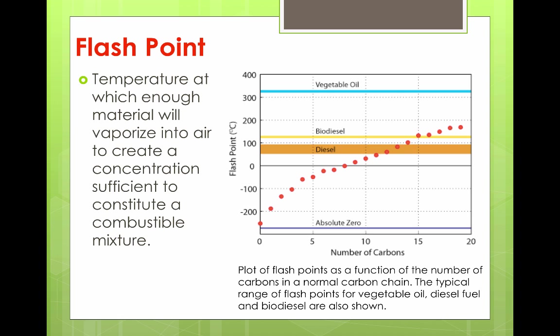Highlighted in the middle of the graph is where diesel burns — just under 100 degrees C for its flashpoint. Biodiesel isn't too far away, just a little bit above 100 degrees C. Vegetable oil, however, is quite a bit higher — it doesn't have a flashpoint until over 300 degrees C. So that's not desirable for burning it in an engine.